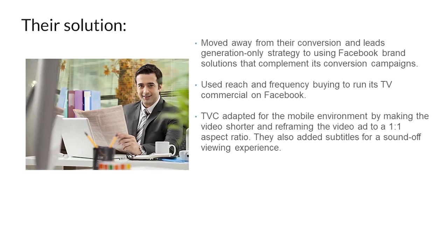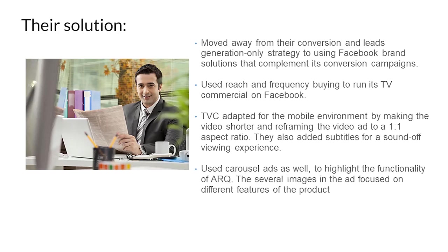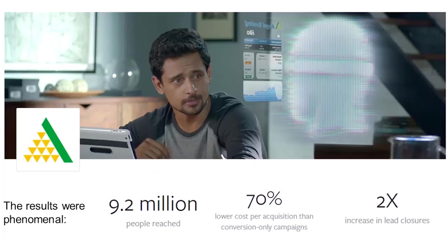Angel Broking used reach and frequency buying and duplicated their TV commercial into a video for R&F campaigns. The TVC was adapted for the mobile environment — converted to a 1:1 aspect ratio — and subtitles were added for a sound-off viewing experience, since most Facebook users watch videos with sound off. They also used carousel ads combining several images focused on different product features. The results were phenomenal: they reached 9.2 million people, acquired customers at a 70% lower cost than before, and saw twice the number of lead closures after running brand campaigns on Facebook.